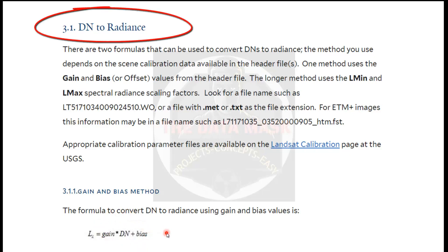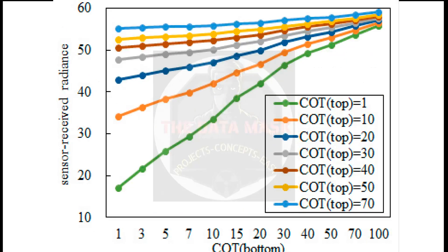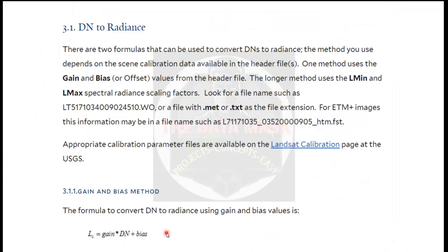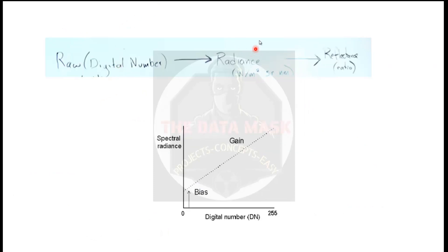The question is how we get gain and bias. This gain and bias is the property of the sensor. Before the launch itself, in laboratory conditions, we give input of various wavelengths of radiance to the camera — various radiance values. So radiance R1 gives DN value D1, and radiance R2 gives DN value D2. All these measurements are written down in the laboratory before the sensor is flown to space. So we know that if our sensor is generating DN value D1, it means the radiance is R1. That linear relationship is already established, so it is straightforward to convert from DN to radiance.